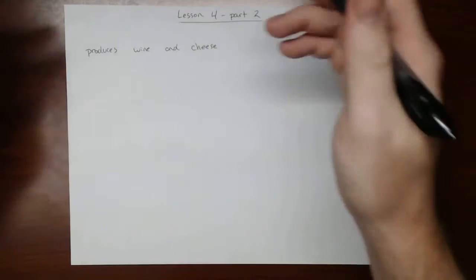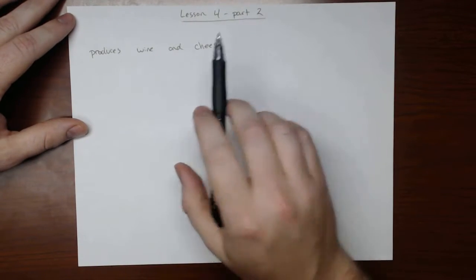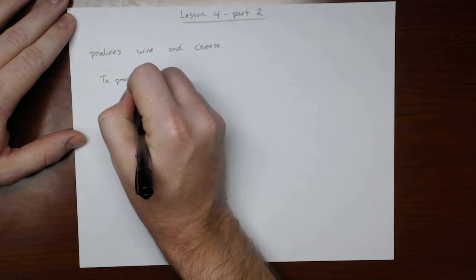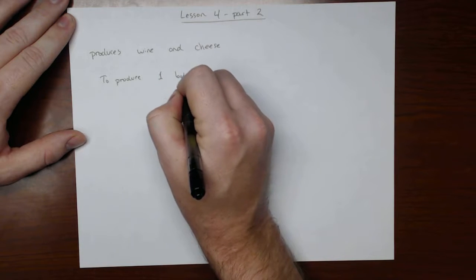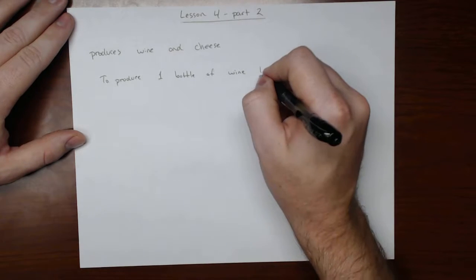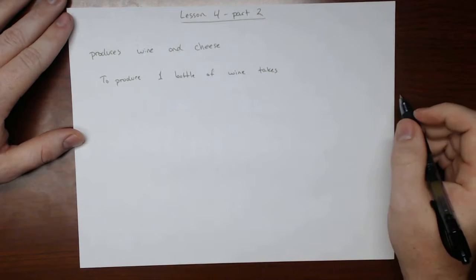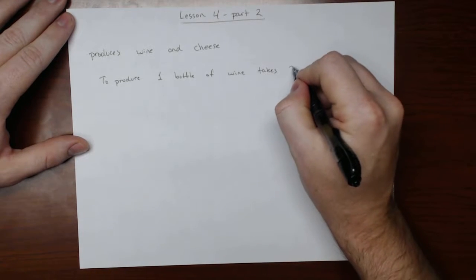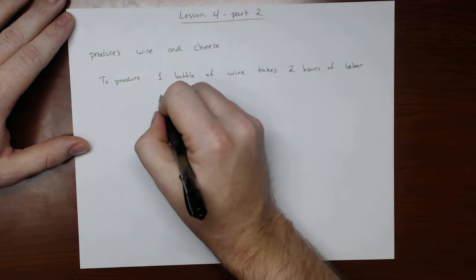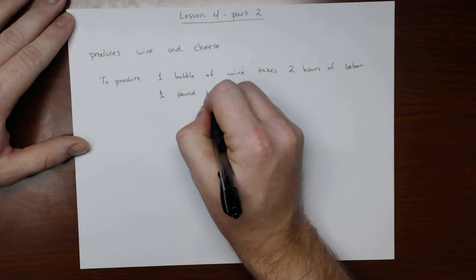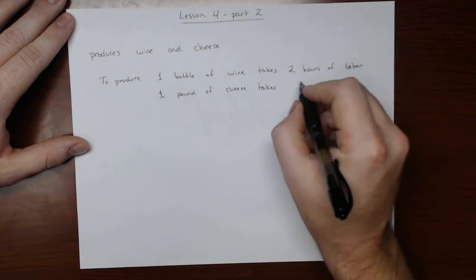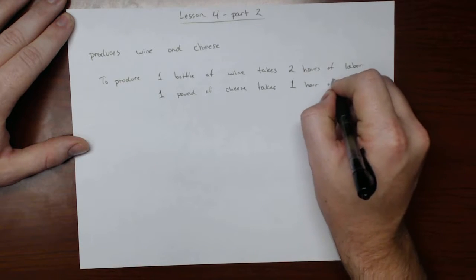So let's say that to produce one bottle of wine takes, let's say, two hours of labor, and let's say that one pound of cheese takes one hour of labor.